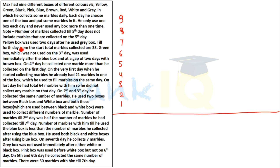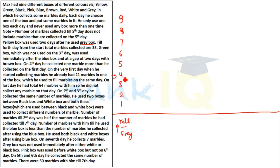Condition 1: The yellow box was used two days after he used the grey box. So yellow is used two days after grey — meaning one box is used between them. Condition 2: Till the fourth day, from the start, marbles collected are 33. So the total marbles collected up to (but not including) day 4 is 33.